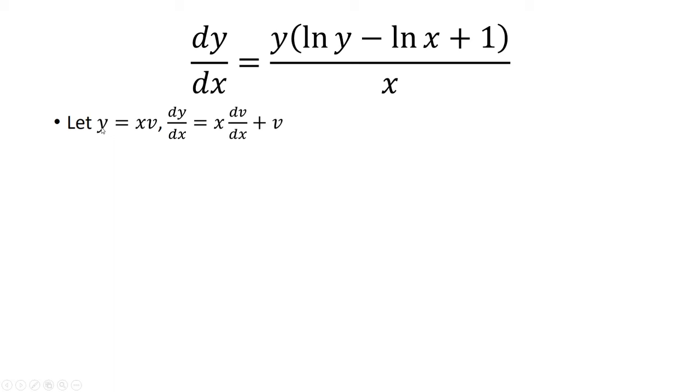So for dy over dx, I'm going to have to use a product rule to take the derivative of x times v. First take the derivative of v, that's dv over dx, times x, and then take the derivative of x as 1, multiply it by v.